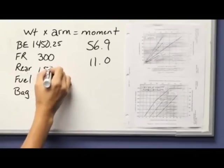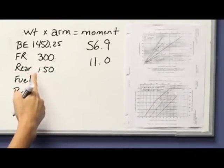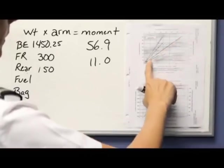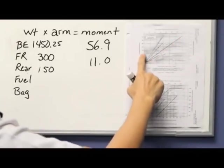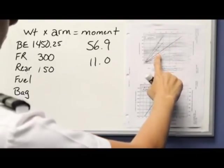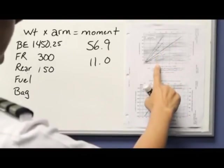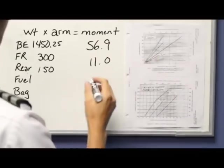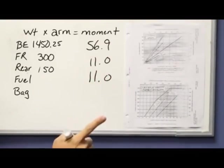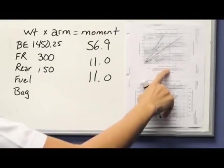Let's say that we have 150 pounds of a passenger sitting in the rear. My passenger line is this long line right here. So I go up to 150, I go straight across to my rear passengers, and then I drop straight down. This number also appears to be 11. Now again, reminding you that's really 11,000, but we've divided it by that 1,000, so it's okay to just put 11.